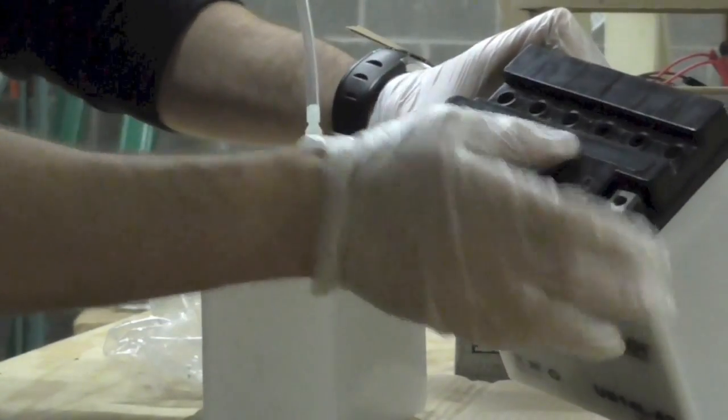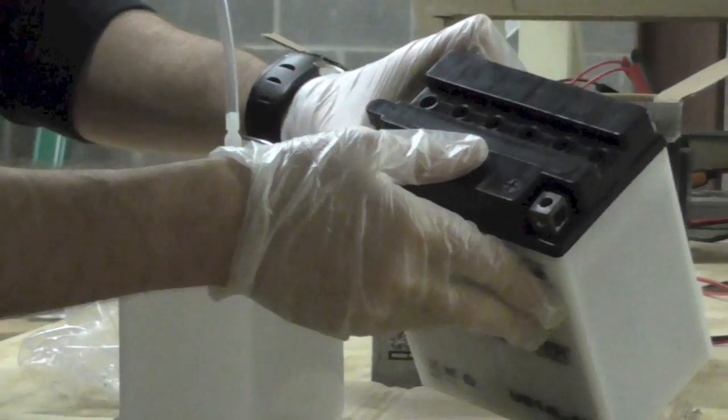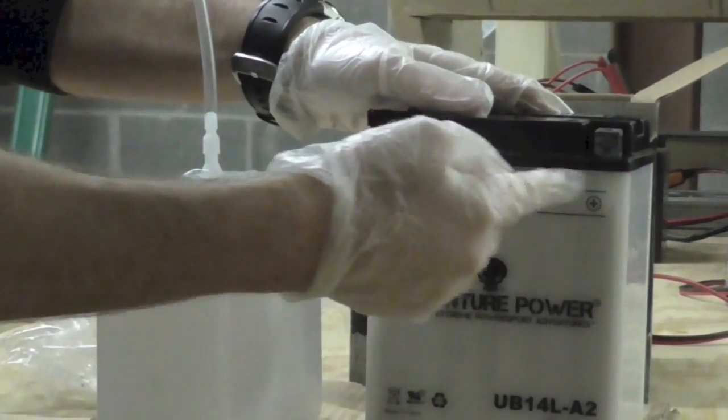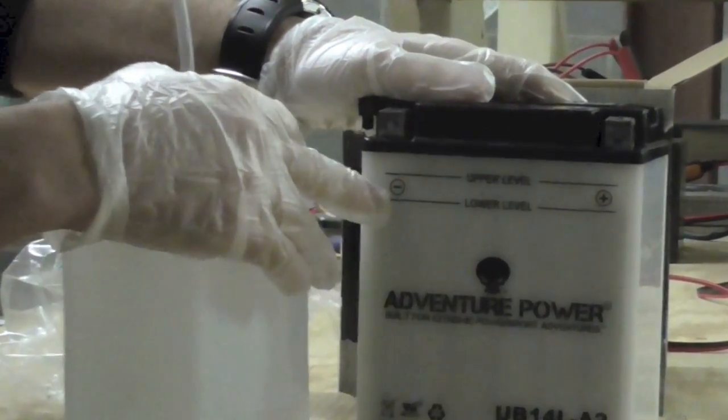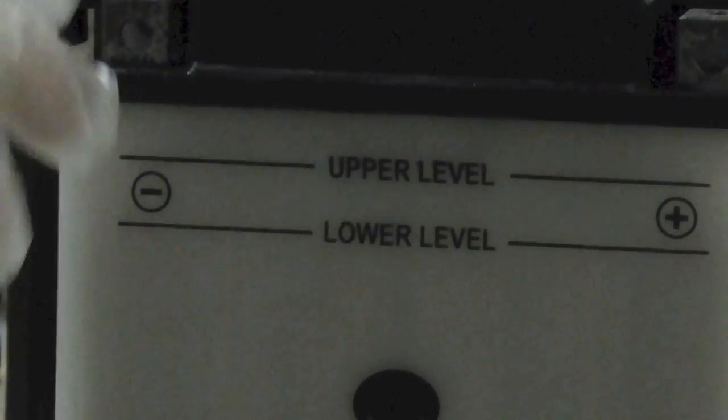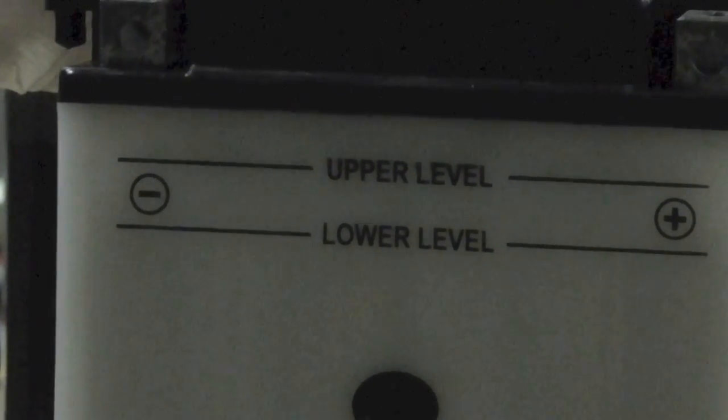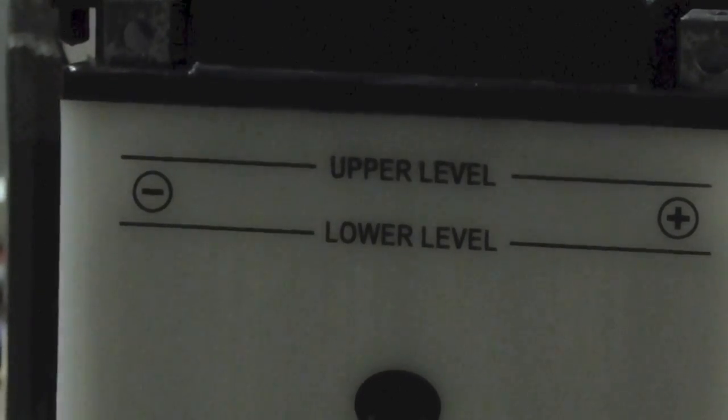If you take a look at the top six cells, we're going to fill each individual cell up to this top line. There's two lines. One is called the lower line, and then there's the upper fill line. We always want to hit the upper fill line. That's going to cover the entire lead plate in acid, give it the maximum surface exposure.